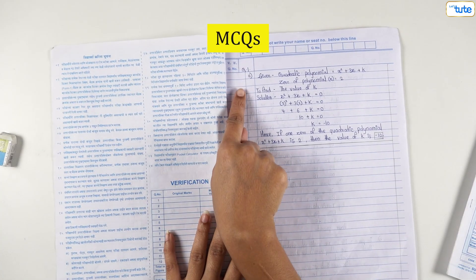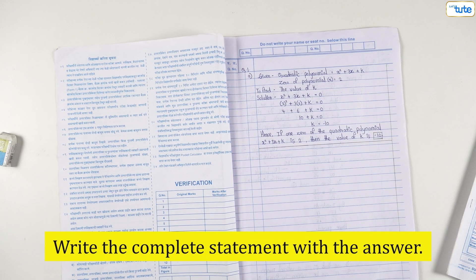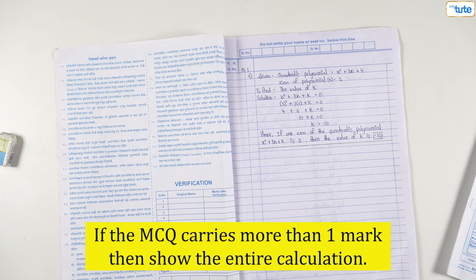In the case of MCQ, don't just mention the correct option. Instead, write the complete statement with the answer. If the MCQ carries more than one mark, then showing the entire calculation is a must.